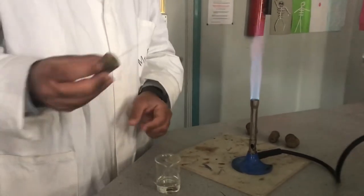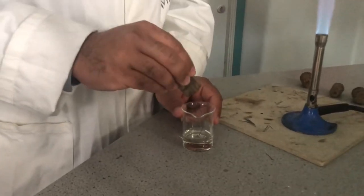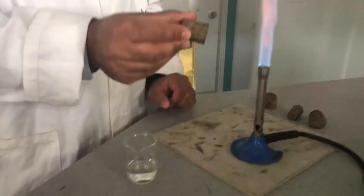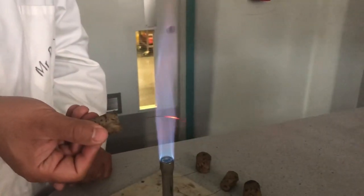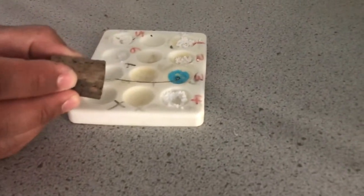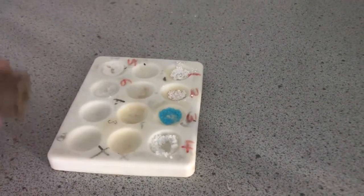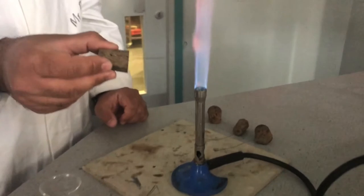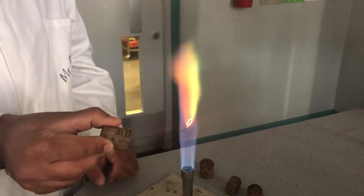This is my nichrome wire. Usually we clean them. These have all been cleaned previously, but just to demonstrate how we clean them, we use a little bit of acid and place it in the flame, just to make sure that there's no existing color. That's now clean. And I'm going to place it in my first compound. And just observe what color it gives me. As you can see, it's giving a turquoise color.